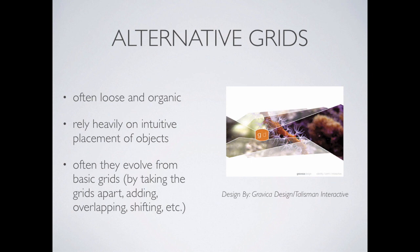Alternative grids are generally more loose and organic. They rely heavily on intuition — this looks right or it doesn't. There's not a scripted way to set up an alternative grid because it is essentially alternative. They evolve from the basic grids, so generally if you set up the basic grids that's a good place to start, but then it might evolve from there.